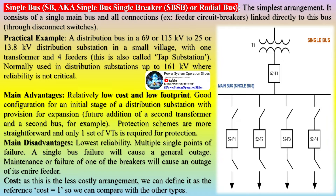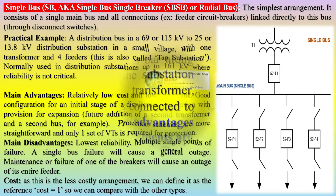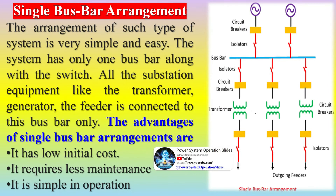The single busbar arrangement is very simple and easy. The system has only one busbar along with a switch. All substation equipment like the transformer, generator, and feeder is connected to this busbar only. The advantages of single busbar arrangements are: it has low initial cost, it requires less maintenance, and it is simple in operation.